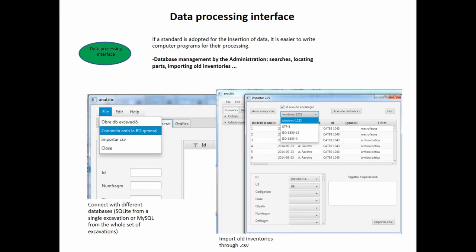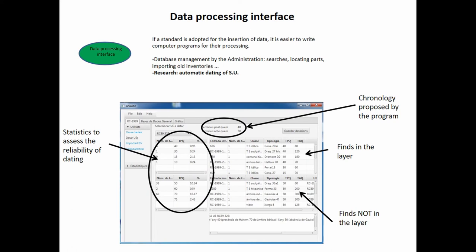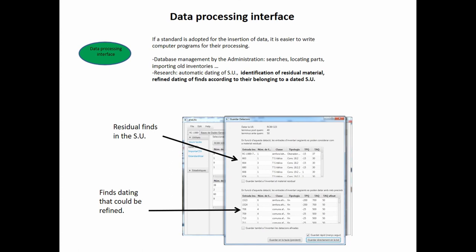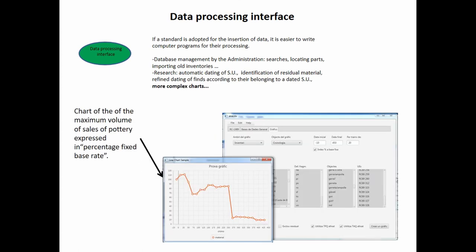If we use a standard, it becomes easier to write software for processing the data. Here we have an example where administration can merge several interventions into a bigger database, import other formats and all reports, and experiment with more advanced features such as the automatic dating of stratigraphic units by statistics, the identification of residual material, and more elaborate charts — for example, the evolution of pottery according to a well-known economic index.